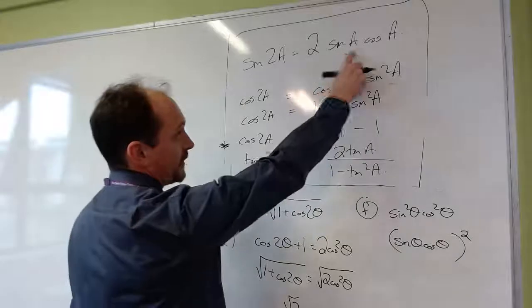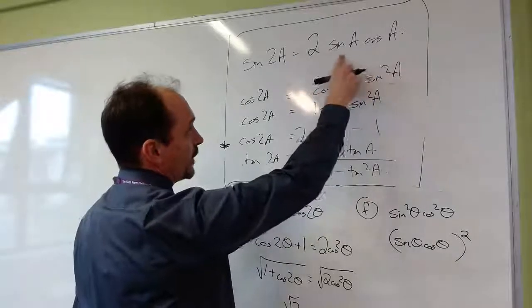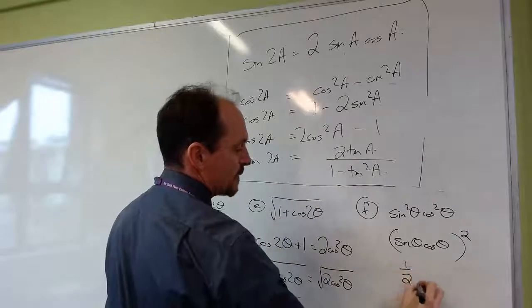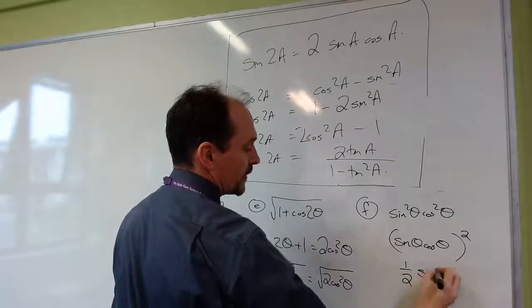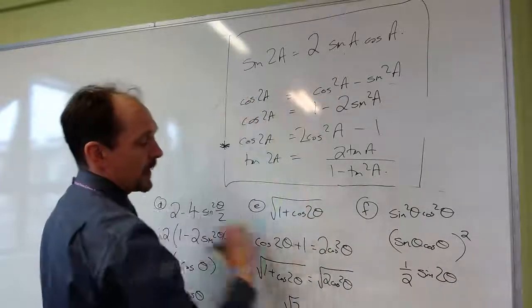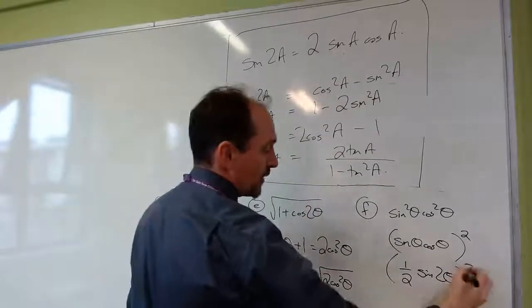Now, you might say, I've got sine theta cos theta, but you've almost got it. Look, if I divide both sides by 2, that is the same as a half, a sine of 2 theta. Dividing by 2 there.